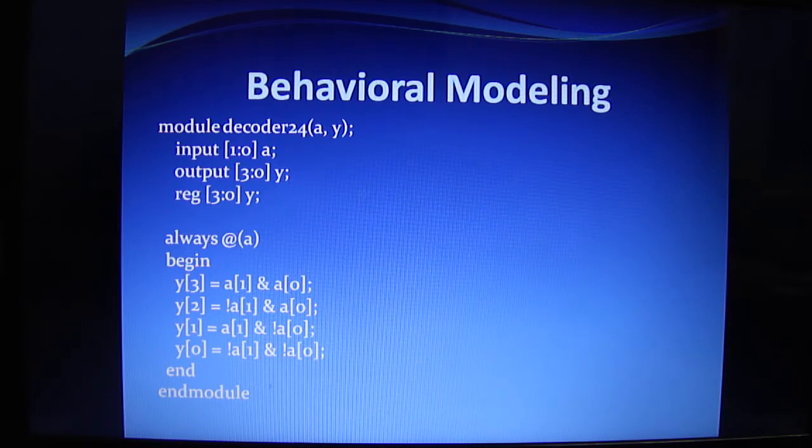For the fourth output, we have seen the equation that is A and B. So here we have written a[1] and a[0]. The two variables are a[0] and a[1].